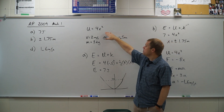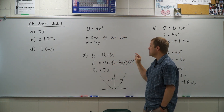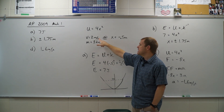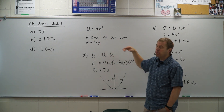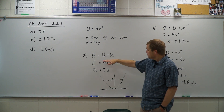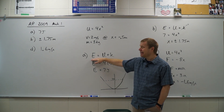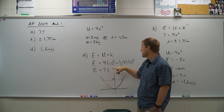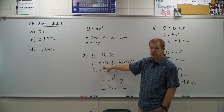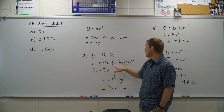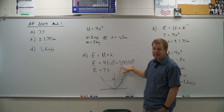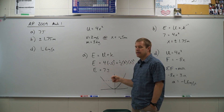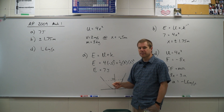They gave us a potential energy function and some information about a specific point — namely the mass and speed at that position. What's helpful is that total mechanical energy is the combination of potential and kinetic. So knowing the position and speed, I can find the kinetic energy and the potential energy at that point, then add them together to get a total of 7 joules.